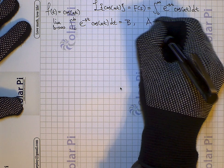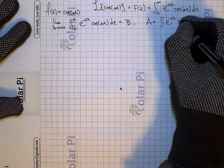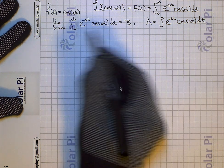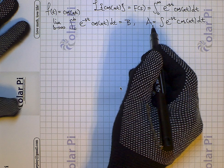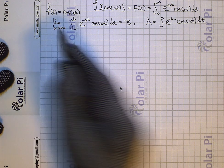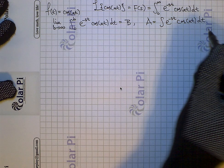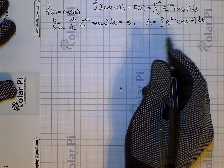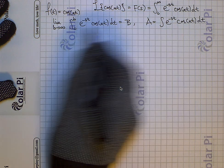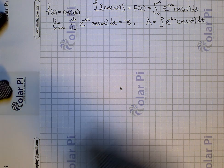And instead, let's deal with capital A, which is just the integral of e to the negative st cosine at dt. The only differences between capital B and capital A are the limits of integration and the limit as b goes to infinity. Working out capital A will go a long way in helping us figure out how to deal with B at each step. I don't have to write the limit notation - I can just deal with capital A.